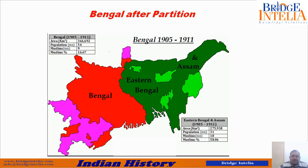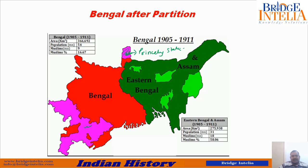This is how Bengal looked after the partition — Eastern Bengal and Assam on one side, and Bengal on the other. The pink-colored regions on the map were not controlled by the Britishers; these were princely states where British only collected taxes but did not have a full government setup with district magistrates or civil servants.